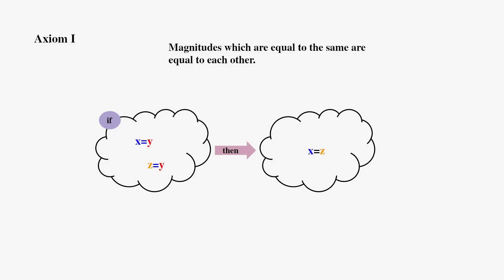Now moving on to axioms. Axiom 1: Magnitudes which are equal to the same are equal to each other. This is basically saying if x equals y, and z equals y, then z equals x.